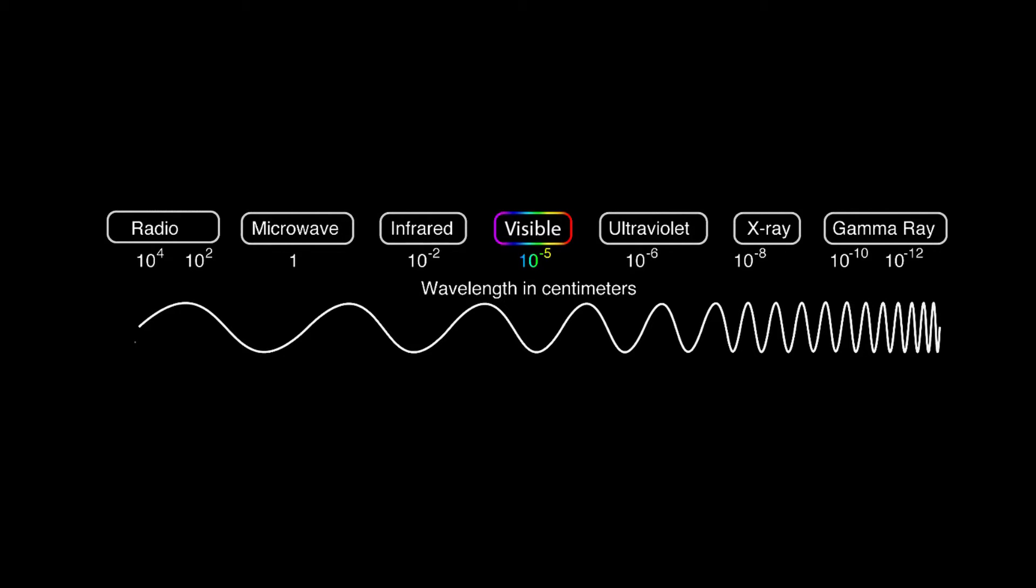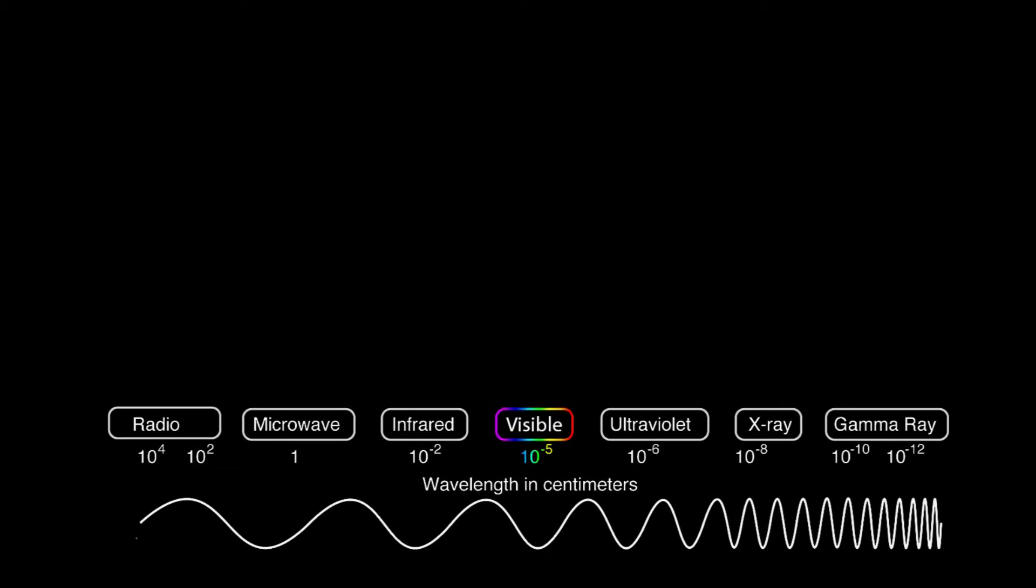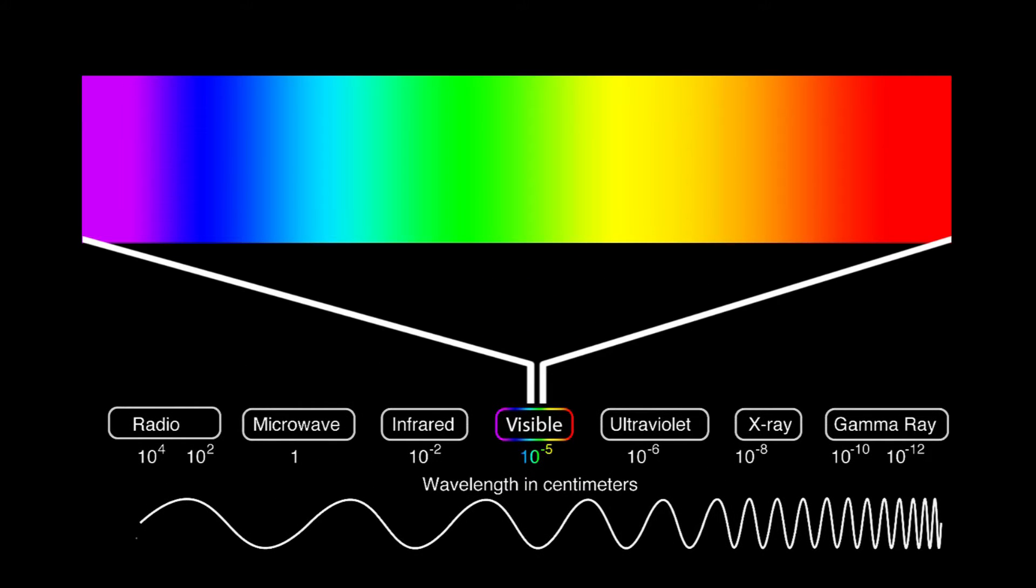Here is a full electromagnetic spectrum. We can see that visible light only takes up a sliver of our spectrum here, right in between infrared and ultraviolet frequencies, spanning from 400 nanometers to 700 nanometers.